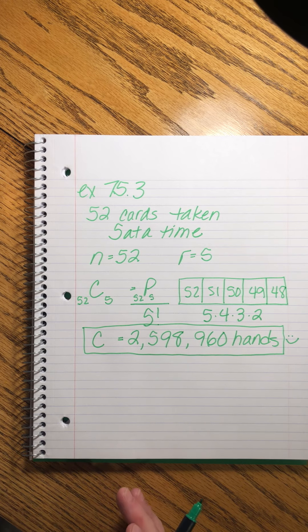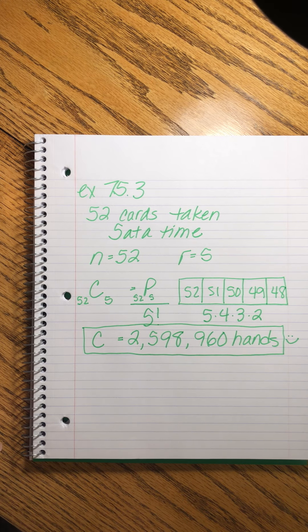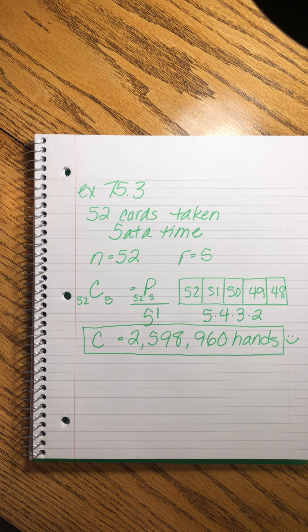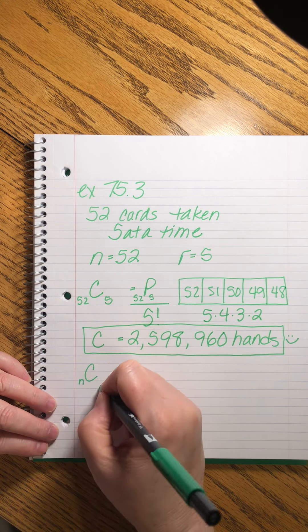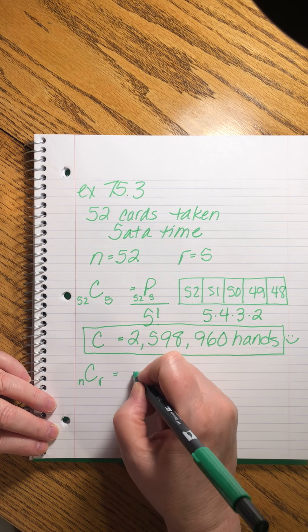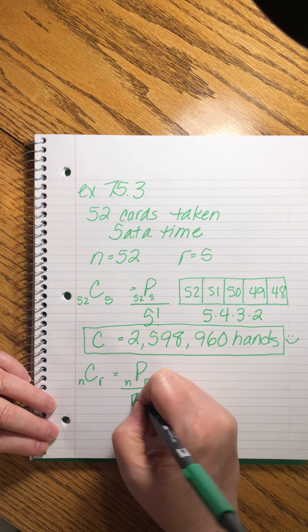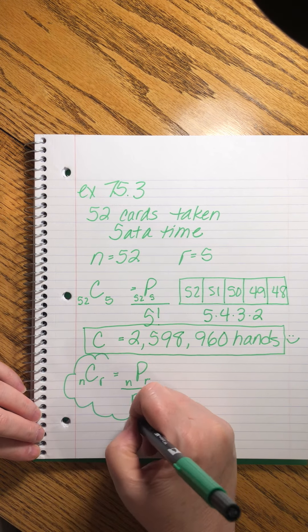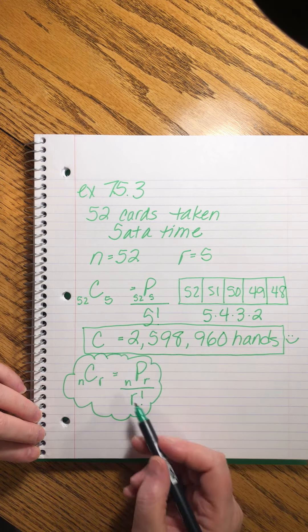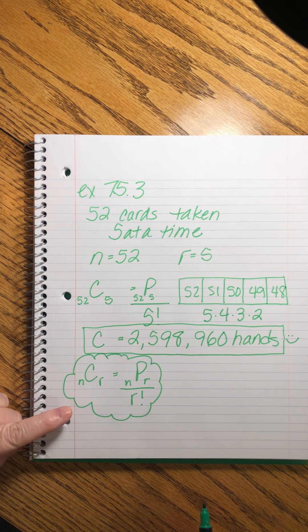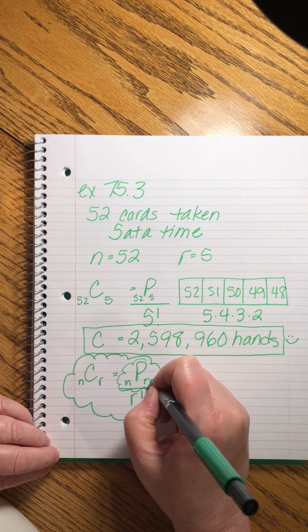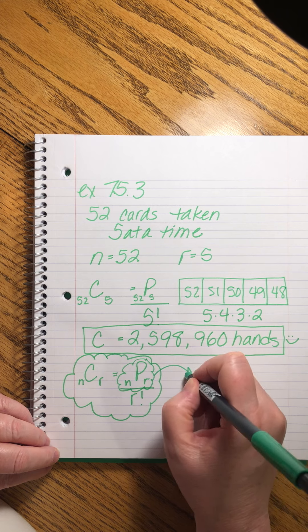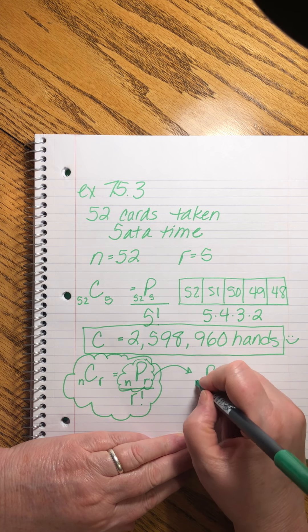Now that we've had a chance to see how this works, I want to go back and just show you a little bit more about the formulas. This is the same thing I've written. This is what I told you. The number of combinations, you find out the permutations, and then you divide by the at-a-time number. But we can also take this piece of it and we have a formula for that, don't we? We know that the permutation, the number of ways that n things can be taken r at a time. This is the formula we learned for that.